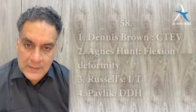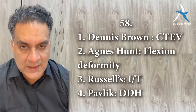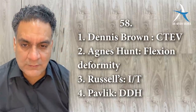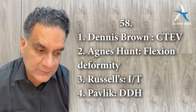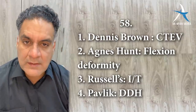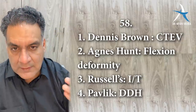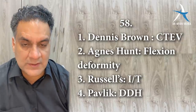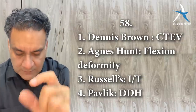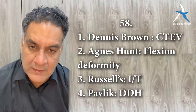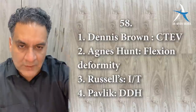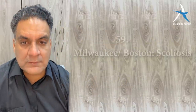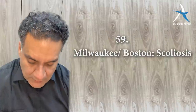Point number fifty-eight: Dennis Brown splint for CTEV (congenital talipes equinovarus). Agnes Hunt traction — asked in past NEET exams — for flexion deformities of the hip. Russell traction — classically a skin traction — for intertrochanteric fractures. Pavlik harness for developmental dysplasia of the hip, where the head of femur is unstable and goes out. Milwaukee or Boston brace for scoliosis.